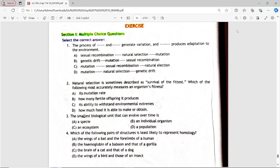The process of dash and dash generates variation and dash produces adaptation to environment. Options are: sexual recombination, natural selection, mutation; genetic drift, mutation, sexual recombination; mutation, sexual recombination, natural election; mutation, natural selection, genetic drift. Answer is option C, mutation, sexual recombination and natural selection. Option C is correct.